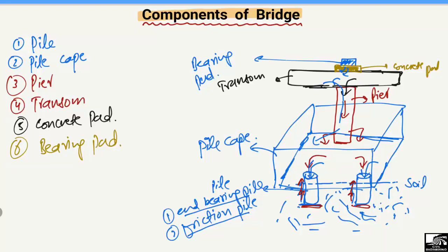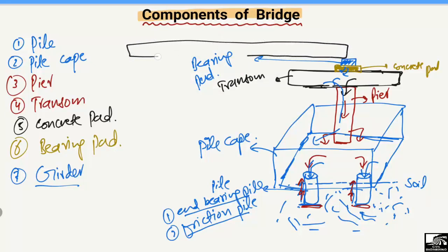The seventh part in the construction of the bridge is the girder, which we mostly call the flexure member of the bridge. The girder takes the load from the vehicles coming on the bridge. Girders are placed in both directions and the vehicle load acts on top of them.